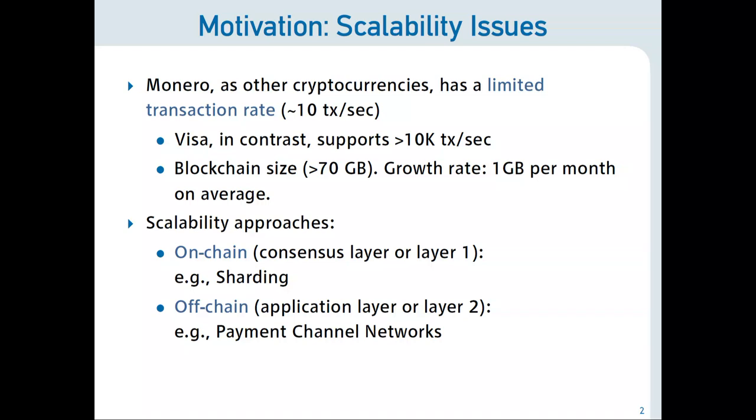Another issue that we are seeing with Monero and other cryptocurrencies is that the size of the blockchain is growing dramatically. Sarang presented really cool graphs about that. Today the size is a bit more than 70 gigabytes, and ballpark, the growth rate is around 1 gigabyte per month. In order to solve these problems, we can group them into a couple of groups. One is on-chain or changes in the consensus layer, Layer 1. Sarang presented some of the cool things that the community has been doing to improve on-chain scalability.